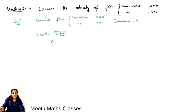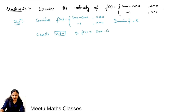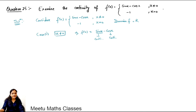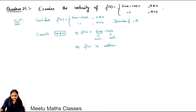When x is not equal to 0, f(x) is defined as sin x minus cos x. Since sin x is a continuous function and cos x is also a continuous function on the whole real line, the difference of two continuous functions is also a continuous function. Therefore f(x) is continuous for all x not equal to 0.